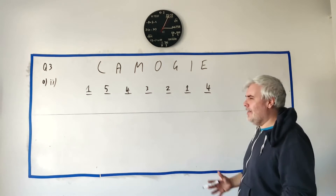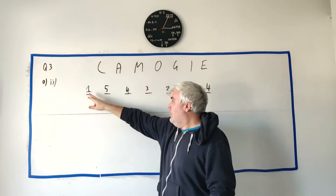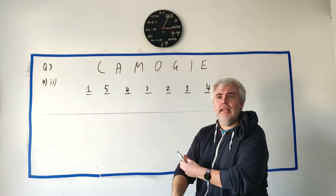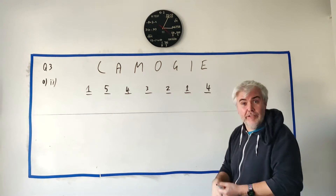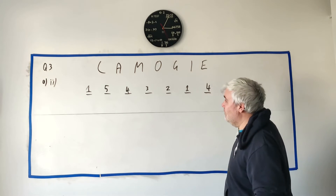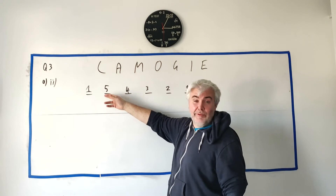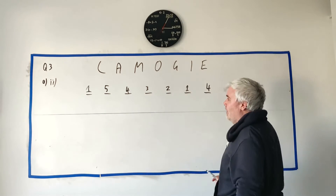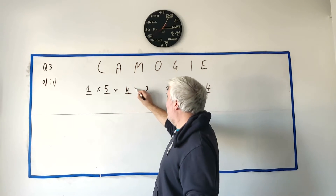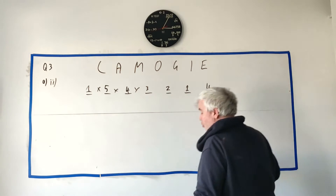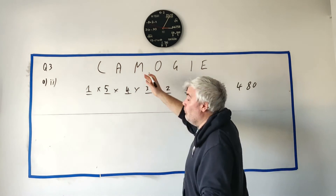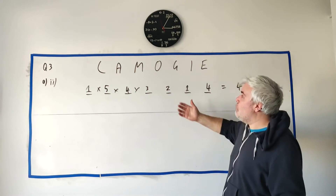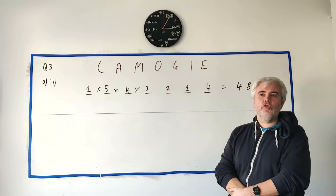How many choices for the second letter? It can't be M, and one vowel will be used at the end, so there are five letters left. Then four, three, two, and one. Imagine picking letters randomly from a bag — we must pick M first, then one of the vowels last, and then pick from the remaining five for the middle positions. Multiplying all these out gives 480, so there are 480 different arrangements.